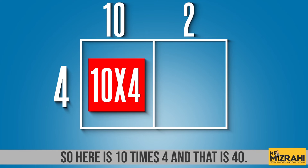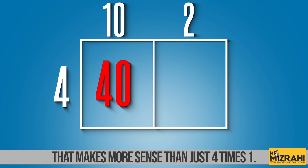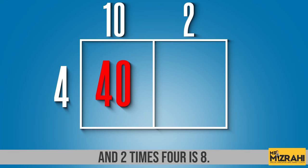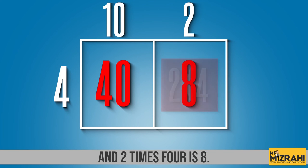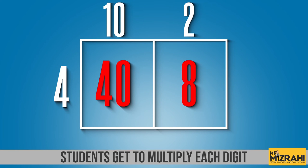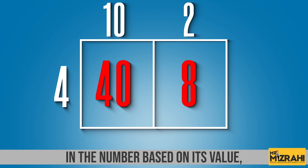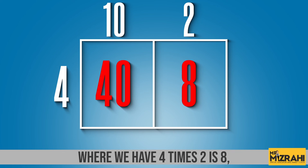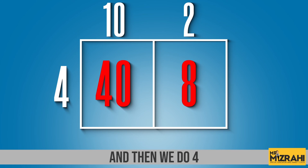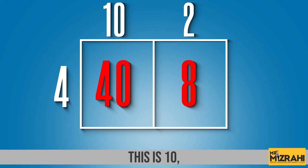So here is 10 times 4, that is 40. That makes more sense than just 4 times 1. And 2 times 4 is 8. In this way students get to multiply each digit in the number based on its value, not just by the number. As opposed to the traditional way, where we have 4 times 2 is 8, and then students say 4 times 1 — but this is not 1, this is 10.